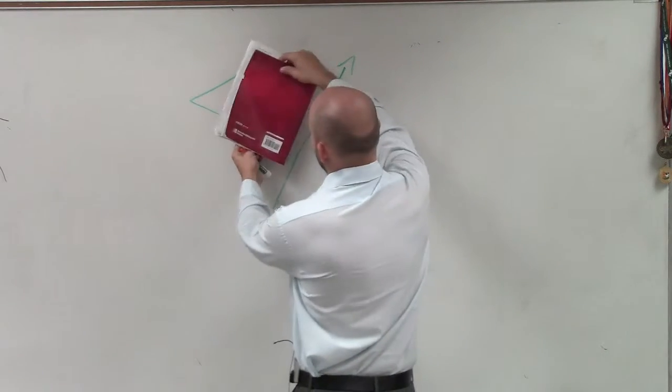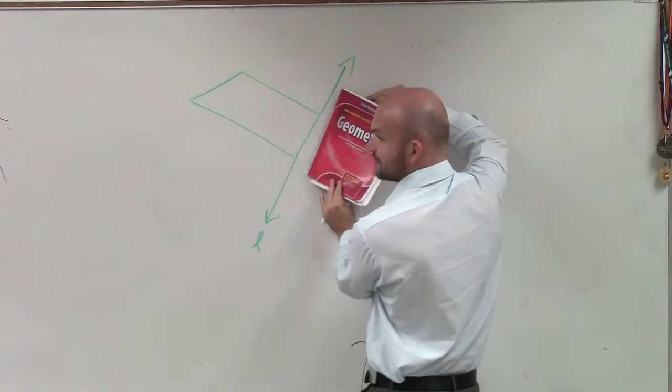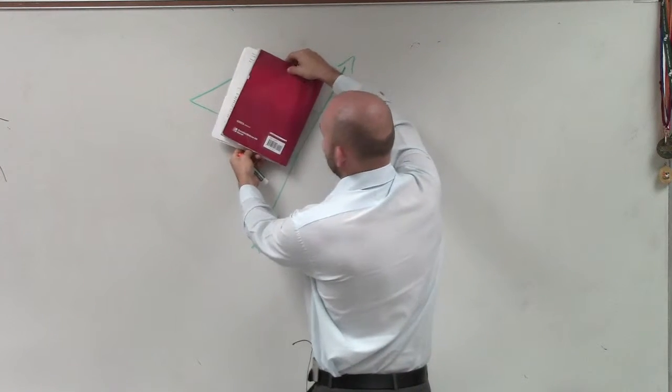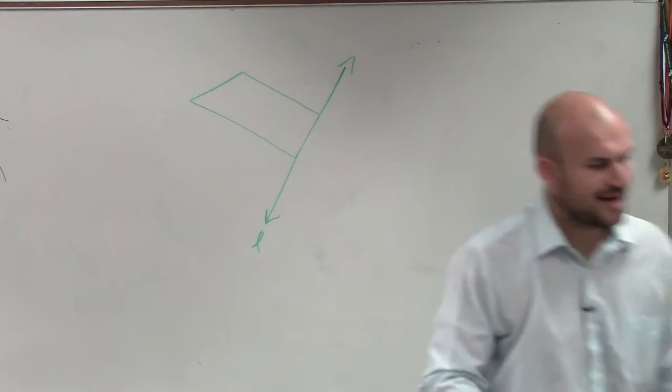When you have a reflection, you are reflecting it over that line. So whatever was right here is going to be the exact same back over on that side, but it's going to be in a different direction.